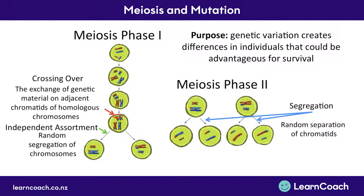The last thing you need to know is crossing over. This is when we get two homologous chromosomes — the two sitting next to each other in a pair — and the chromatids that are next to each other actually physically cross over and swap the genetic material they have. So all three of these things cause genetic variation through meiosis.